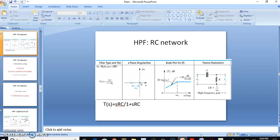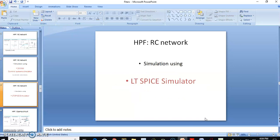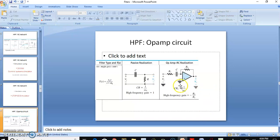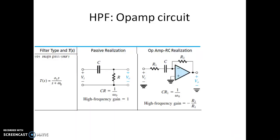We will now see the realization of an op-amp-based high pass filter circuit. In this op-amp circuit, the cutoff frequency is designed by R1 and C, so omega-0 equals 1 over C·R1, whereas the high frequency gain is minus R2 by R1. By changing R2 to R1, we can change the gain; by changing R1 and C, we can change the cutoff frequency.